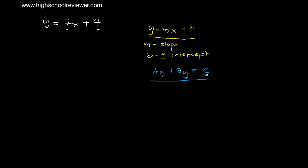Looking at this equation, we need to transpose or transfer the term with the x variable to the side of the term with the y variable. So this positive 7x, we need to transpose that to the left side so that it will be together with the y variable. When we transpose a positive term to the other side, it will become negative. So since this is positive 7x, transposing it to the other side will make it negative 7x.